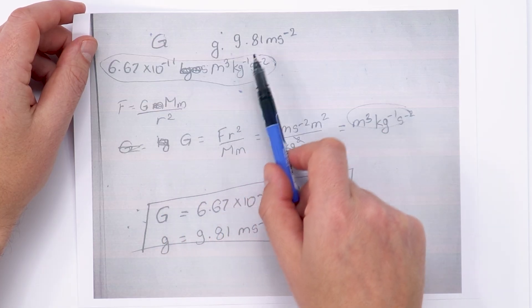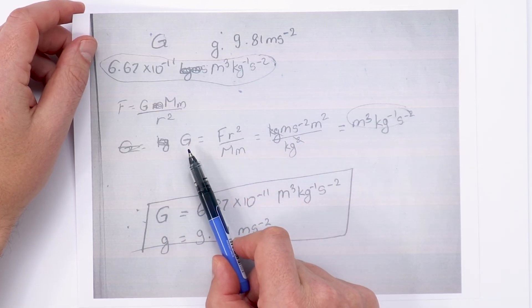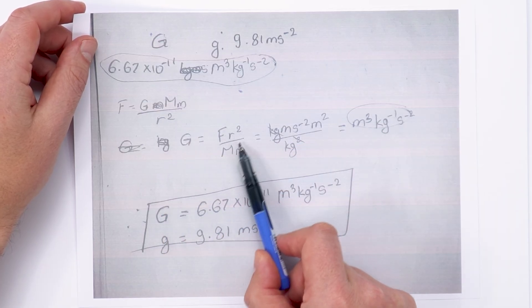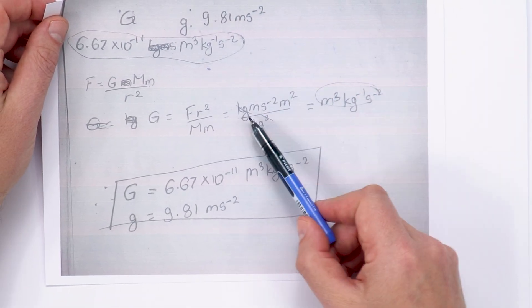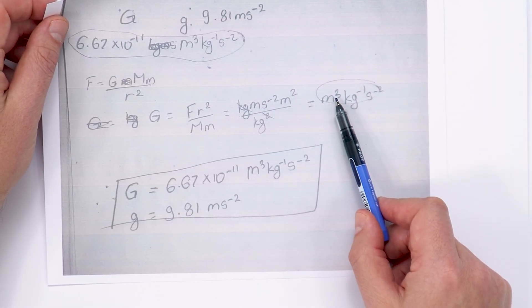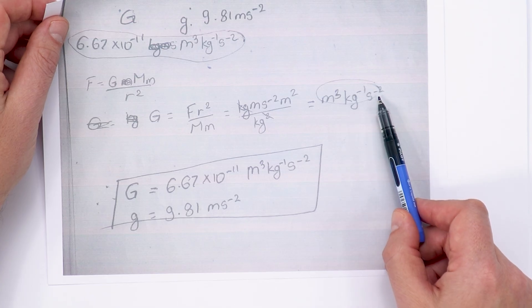When it comes to an expression for finding G they've rearranged FR squared over MM which is I think what I did just previously in the video. You can see they've kind of cancelled here to get metres cubed, kilogram to the 1, second to the minus 2.